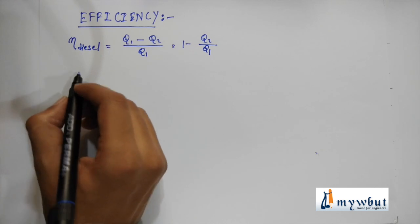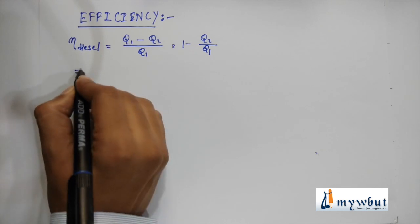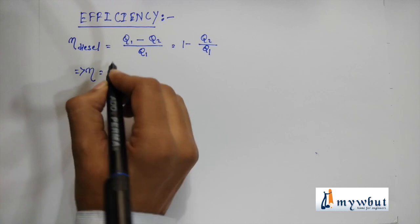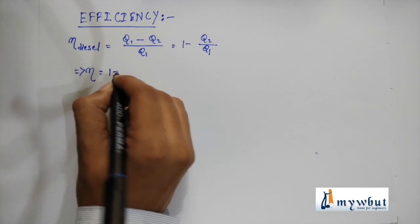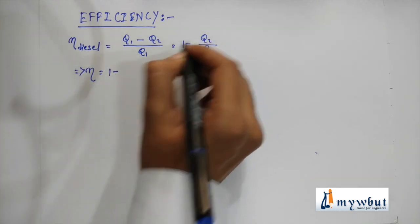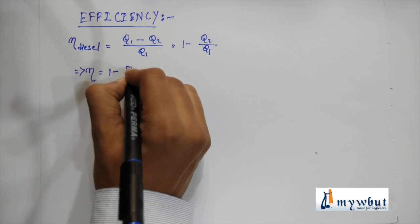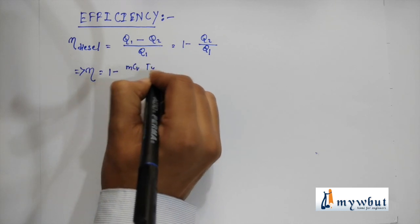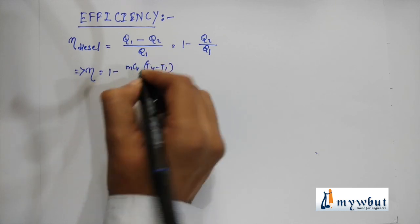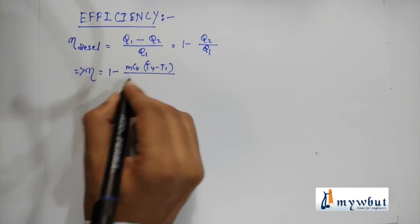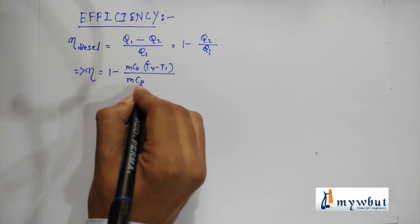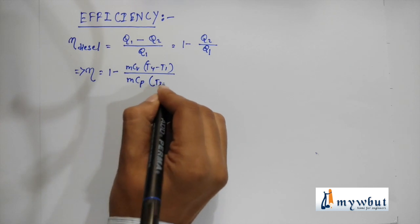Here in case of the diesel cycle, we write efficiency is equal to 1 minus, if we put the value of q2 we get m*cv*(T4 - T1), and if we put the value of q1 we get m*cp*(T3 - T2).